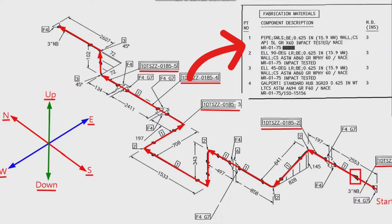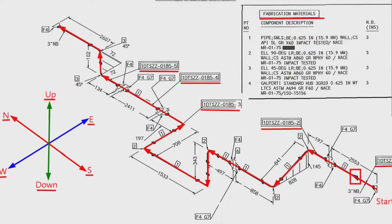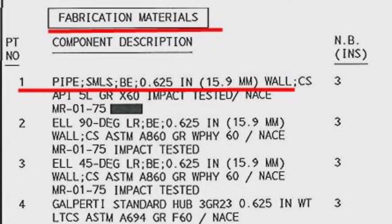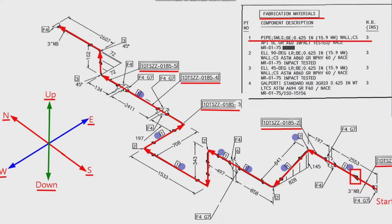Let's learn the materials used in the pipeline. This is the list of materials for fabrication. Detail number 1 was used in several places in the pipe drawing. The item number 1 is pipe, 0.625 inch — that is 15.9 wall thickness — the material is carbon steel, the quantity is 6 pieces, and the size is 3 inch.